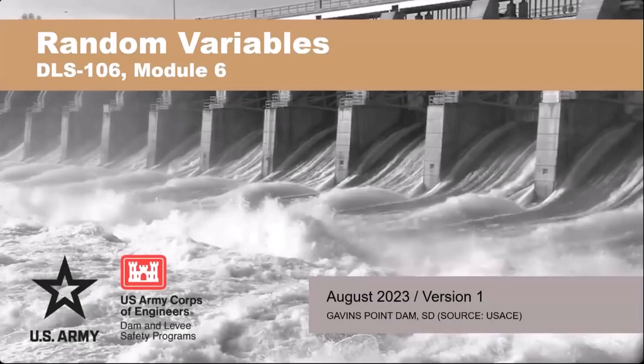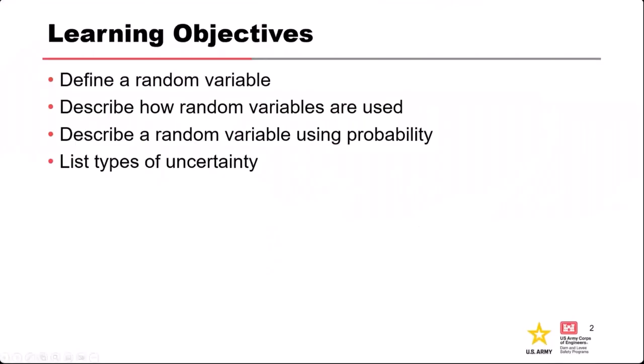A key element of risk analysis is that we have variables whose value is often uncertain — hence the name random variables. The objectives for this class are to give a definition of what a random variable is, how they work and how they're used in risk analysis, how we describe them with probabilities, and then the different ways we can describe, characterize, and model the uncertainty in our variables.